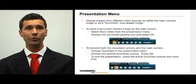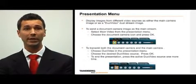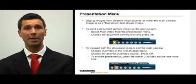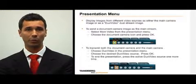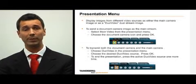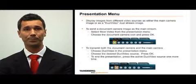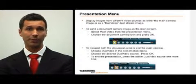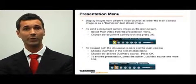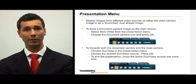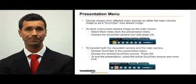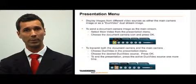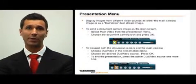You can choose to display images from different video sources as either the main camera image or as a duo video, dual stream image. To send a document camera image as the main stream, select main video from the presentation menu. Next, choose the document camera icon and press OK.